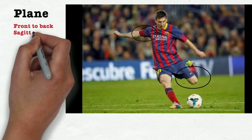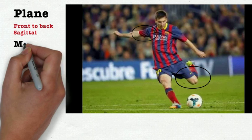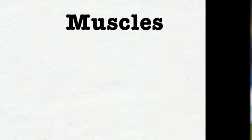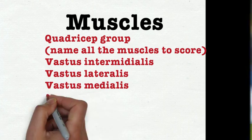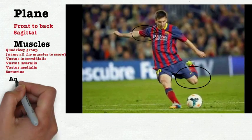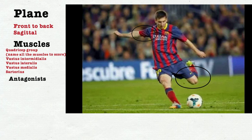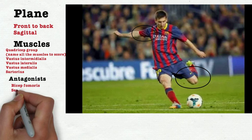All right. So the planes for this one will be front to back. So that's sagittal. The muscles for that one is going to be the quadricep group. Now remember, name all of the muscles to score. If you don't, then you're not going to score points on your tests.